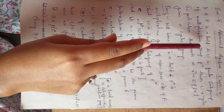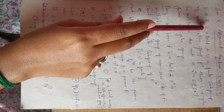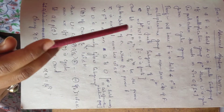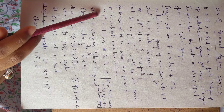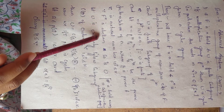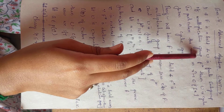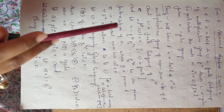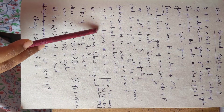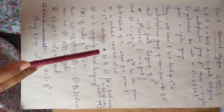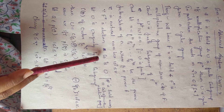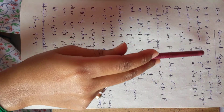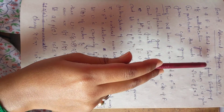Since f is a field, f* is the multiplicative group of f, and f* is abelian. Since u is a finite subgroup of the abelian group f*, u is also abelian. Therefore u is an abelian group.